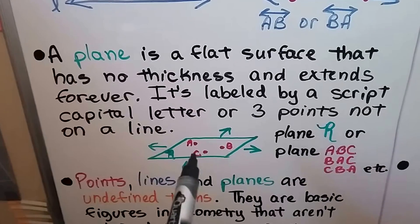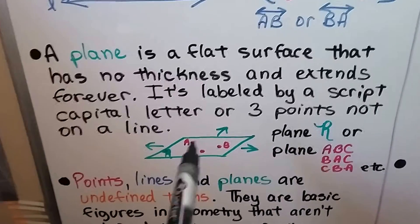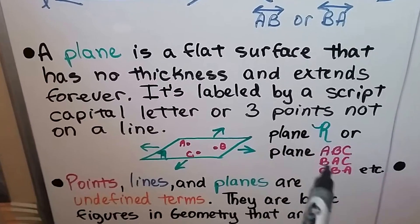So here we have A, B, and C inside the plane. So we could say that's plane ABC. And it doesn't matter what order we put them in. We could put them in any order.